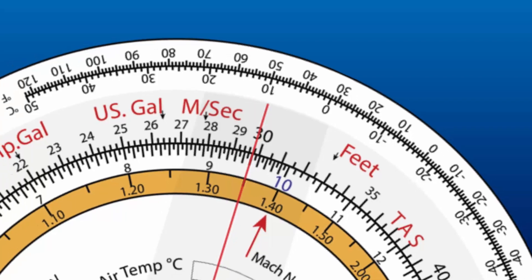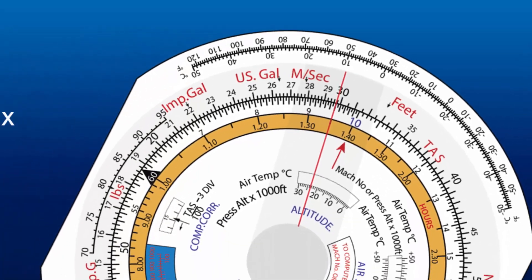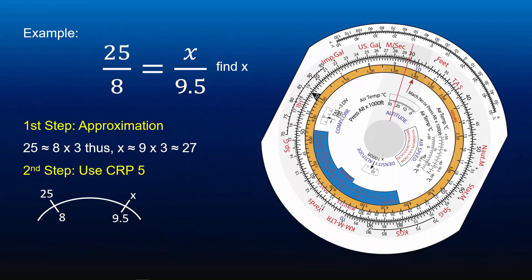Read off the answer on the outer scale opposite to 9.5 — it is 29.7. We now know X is equal to 29.7. However, to get the final answer we first need to confirm with the approximate value. Our approximate value is 27, and 29.7 is within the ballpark of 27. Thus, the final answer is X equal to 29.7.